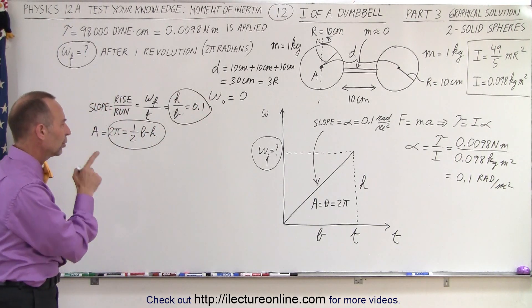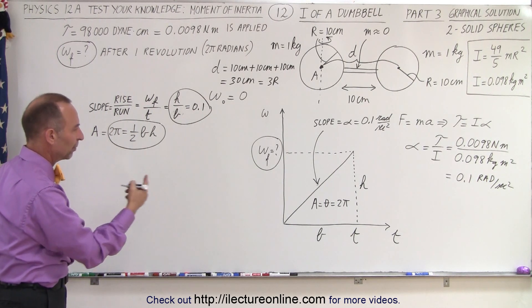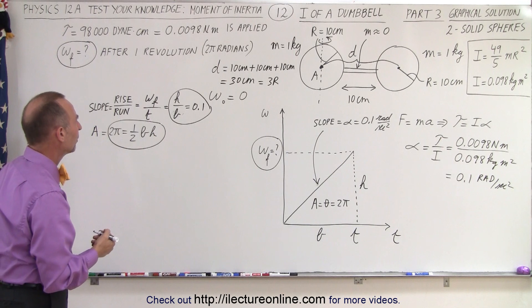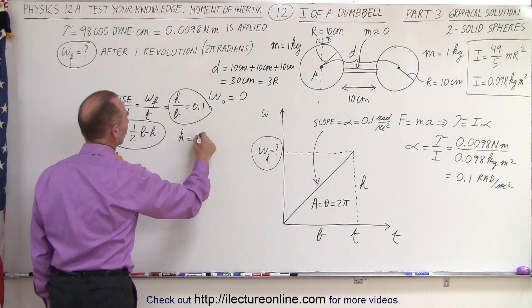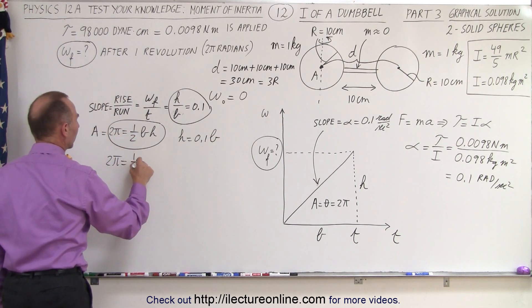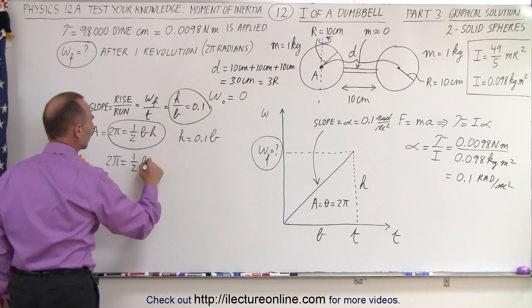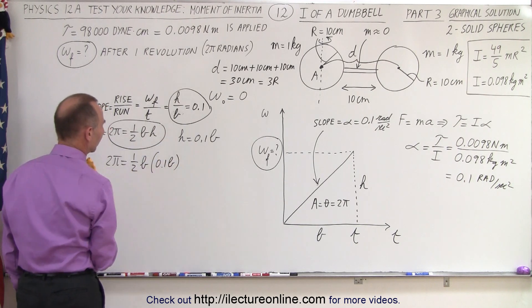So, what we could do is we could say that the height is equal to 0.1 times the base, which means that 2 pi is equal to one half the base times the height, which is 0.1 times the base.